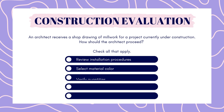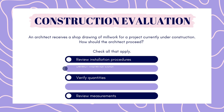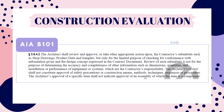Next up is construction evaluation. An architect receives a shop drawing of millwork for a project currently under construction. How should the architect proceed — check all that apply: review installation procedures, select material color, verify quantities, review for conformance with design intent, or review measurements? The answer is: select material color and review for conformance with design intent. The architect is only required to review submittals for conformance with the design intent and is not responsible for reviewing installation procedures, verifying quantities, checking measurements, or completeness of details. If a decision on color or finish is required, the contractor must provide the full range of manufacturer's options, and is often also required to submit a physical sample.